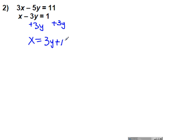And so now what we're going to do is we're going to take this 3y plus 1 and you're going to substitute it in for x in the other equation. So you're going to write the other equation out except instead of writing x, you're going to write 3y plus 1. So I'm going to have 3, then 3y plus 1. And then you still have to finish that first equation. Minus 5y equals 11.